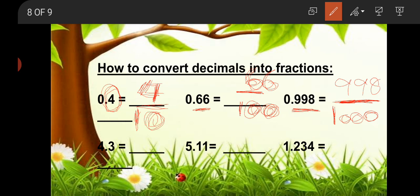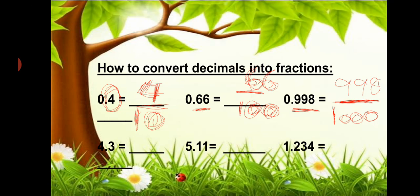So before we convert a decimal number to a fraction, first we see the number of digits after the point. We put zeros in the denominator — not in the numerator. You write 10, 100, or 1000 in the denominator depending on the number of digits after the point. It's very clear and very easy.